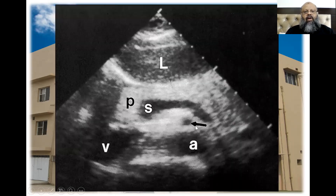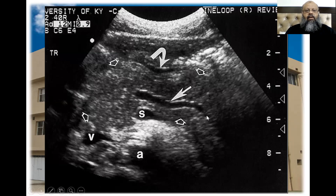There is more fat — a typical case of fatty pancreas. Here is the aorta, the splenic artery, the splenic vein, and we can identify the tail, body, neck, head, and uncinate process of the pancreas. A dilated pancreatic duct can be seen whenever there is a mass at the head of the pancreas, or there is pancreatitis — either acute or chronic.